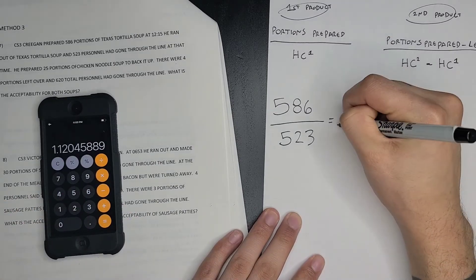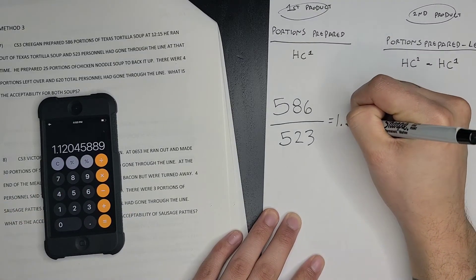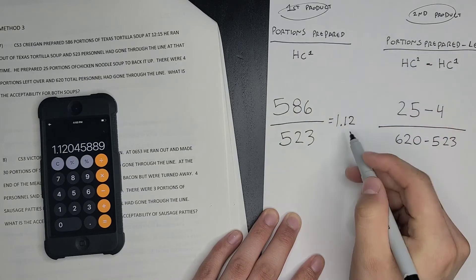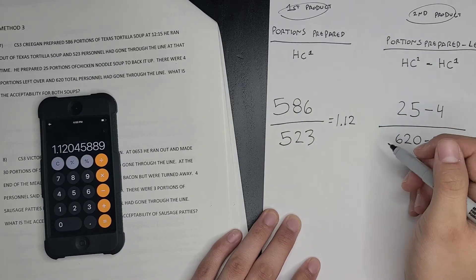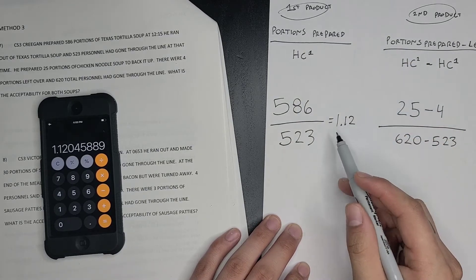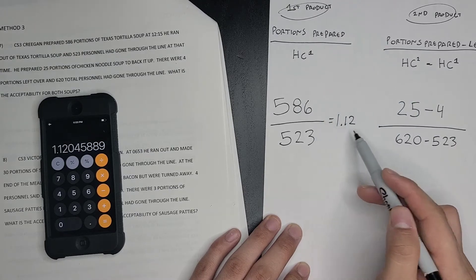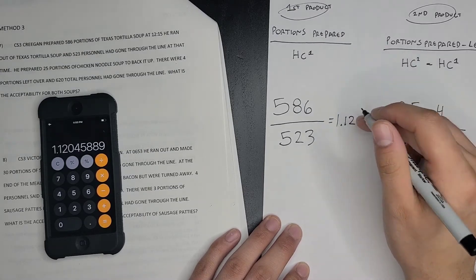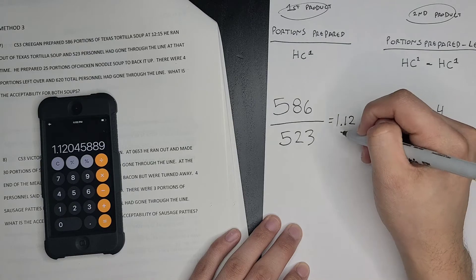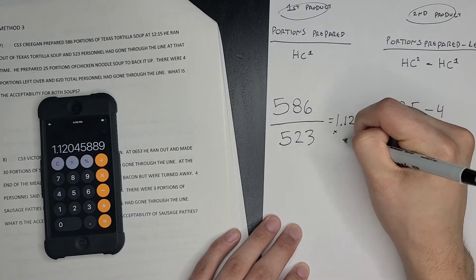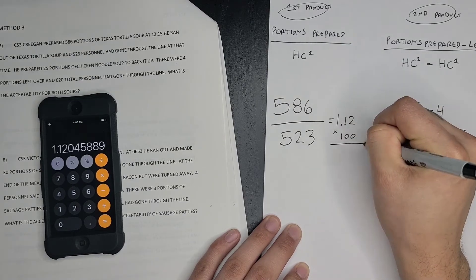Hundredths place, only these two numbers. Again, acceptability is always a percentage, so after that we multiply this by 100.